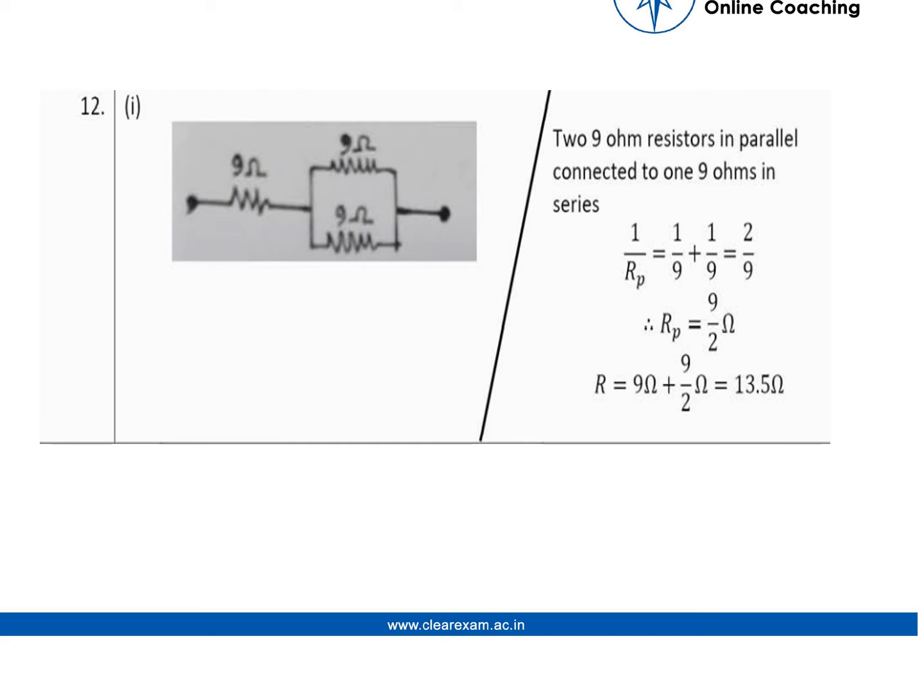Three resistors of 9 ohm each to give 13.5 ohm. The solution says that two nine ohm resistance in parallel connected to one nine ohm in series. So first we have done two in parallel, one by nine plus one by nine, so the resultant comes out to be nine by two, and then nine by two with nine in series which gives us 13.5 ohm.